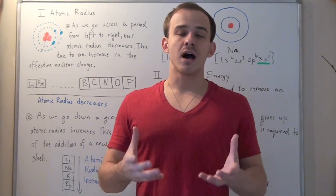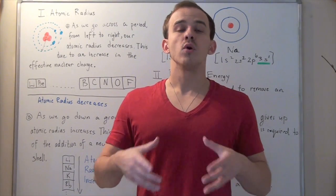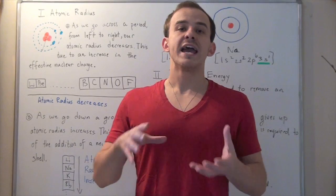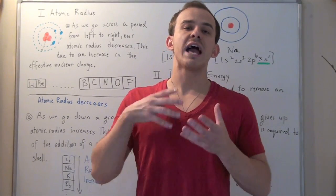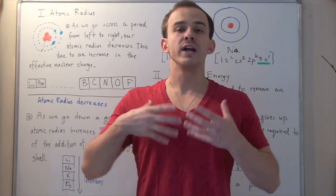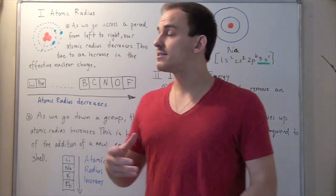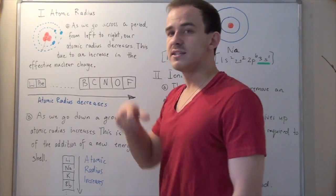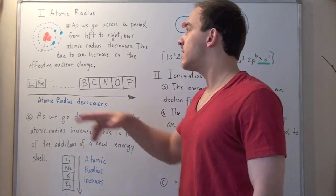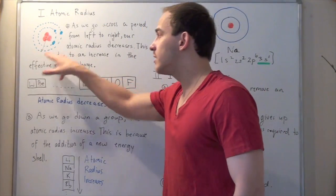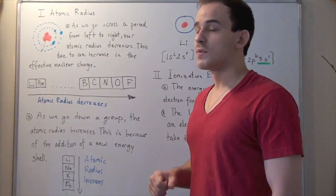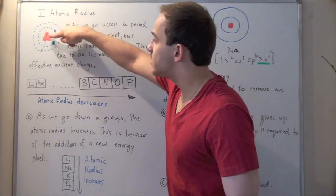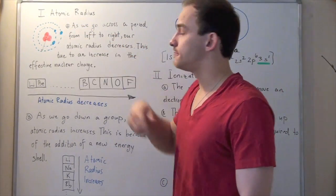So, what is an atomic radius? It's exactly what you think it is. If you think about an atom as being a sphere, then the radius begins at the center of our nucleus and ends at the outermost electron shell. For this atom, our radius is the black line.